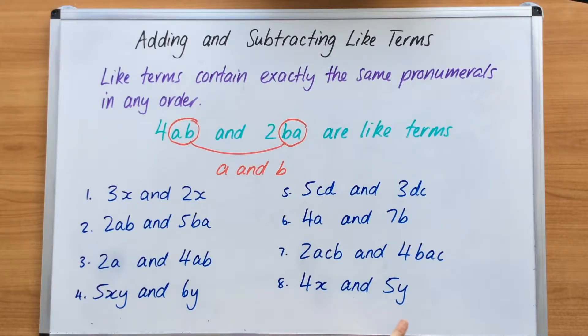So let's have a look at these 8 examples I've got here for us. We've got 3X and 2X. They are like terms because they share the pronumeral X. We have 2AB and 5BA. This is very similar to our example here. Yes, they are like terms. It doesn't matter that one's got an AB and this has got a BA. They both have a relationship because they have an A and a B and therefore they are like terms.